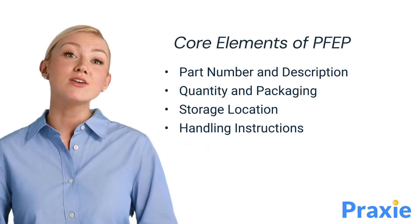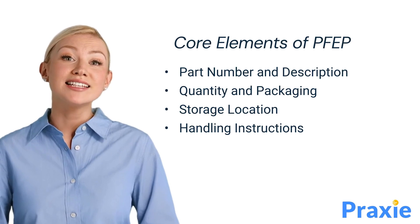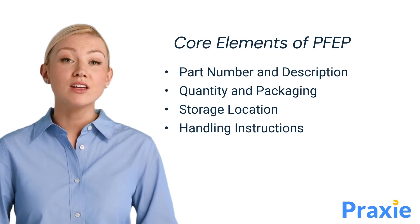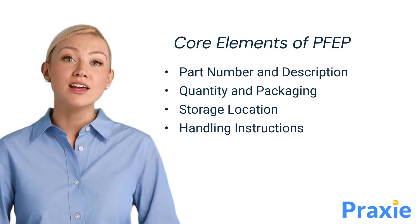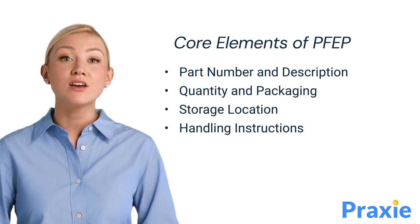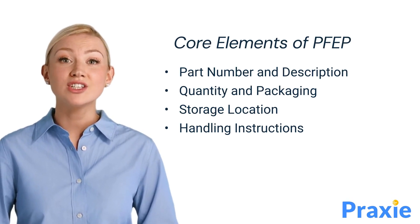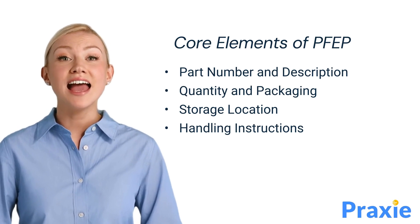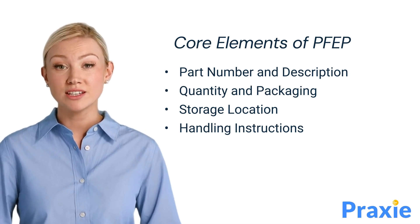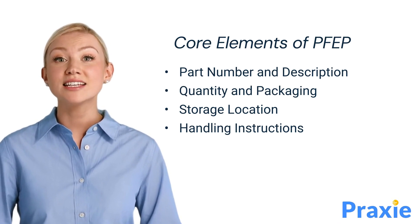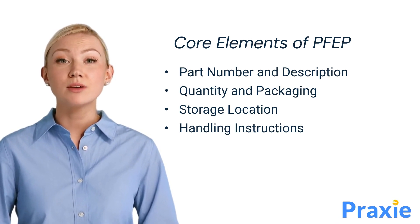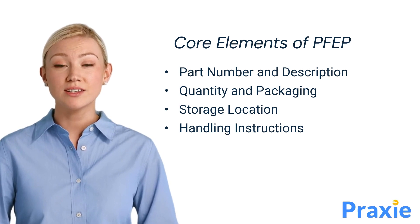Plan for Every Part involves documenting essential details for every part, including part number and description, quantity and packaging, and storage location and handling instructions. These details ensure that each part is properly managed from storage to production.